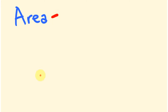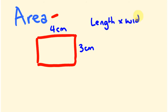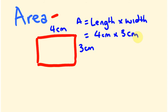So let's work out how to calculate area. The area of a rectangle is fairly easy to work out. Say this shape is 4 centimeters by 3 centimeters. The way we work out the area of a standard rectangle or square is length times width. So area equals 4 centimeters times 3 centimeters.